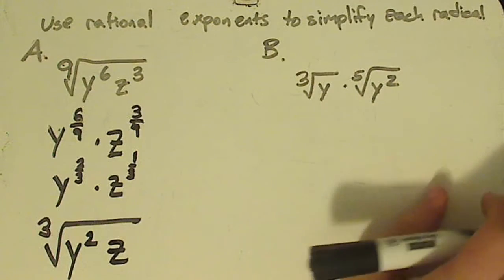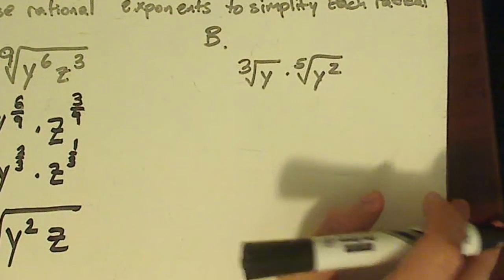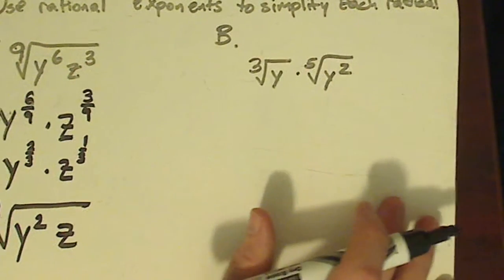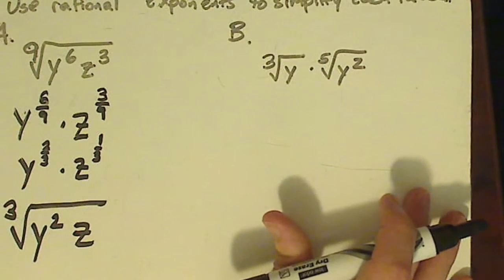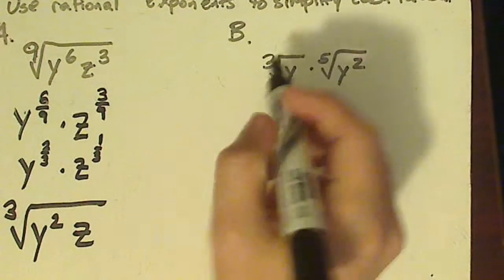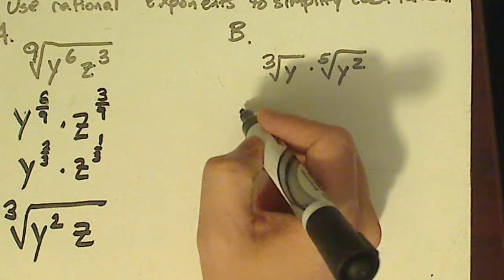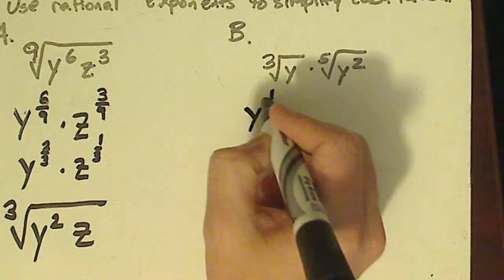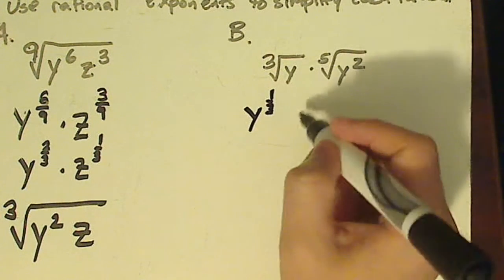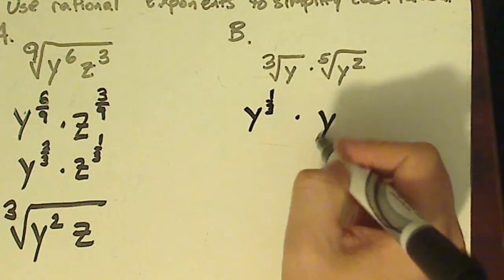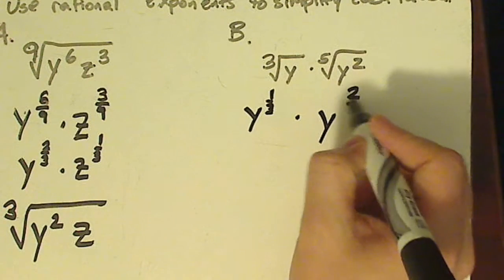Now for the second one, you're going to do a similar thing. Keep that on the screen. Rewrite both of these separately. So it would be y raised to one third and then y raised to the two fifths.